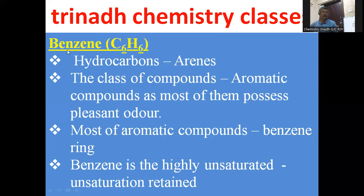In Greek terminology, 'aroma' means pleasant smell. Based on the fact that they possess a pleasant smell, they are called aromatic compounds. That is why this class of compounds was named aromatic compounds. Most of the aromatic compounds contain a benzene ring.